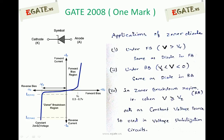Above Iz maximum, if the current flowing through the Zener diode exceeds this limit, the Zener diode will get damaged. The important point is that the Zener diode operates under the reverse breakdown region where it maintains constant voltage. To check whether it is in the reverse breakdown region or reverse bias region, you check the voltage across the Zener diode: if it is less than the breakdown voltage, it is in reverse bias; if it is greater, it is in the Zener breakdown region maintaining constant voltage Vz. This is very useful for solving the problem.